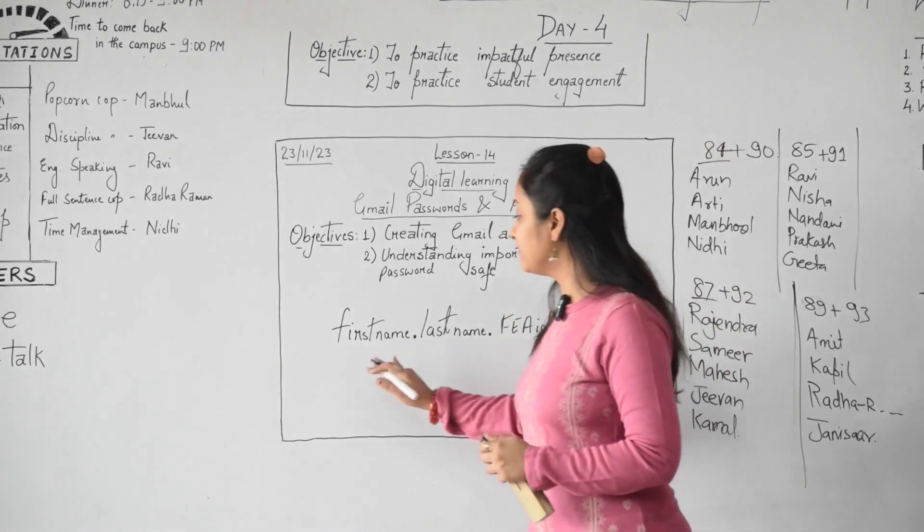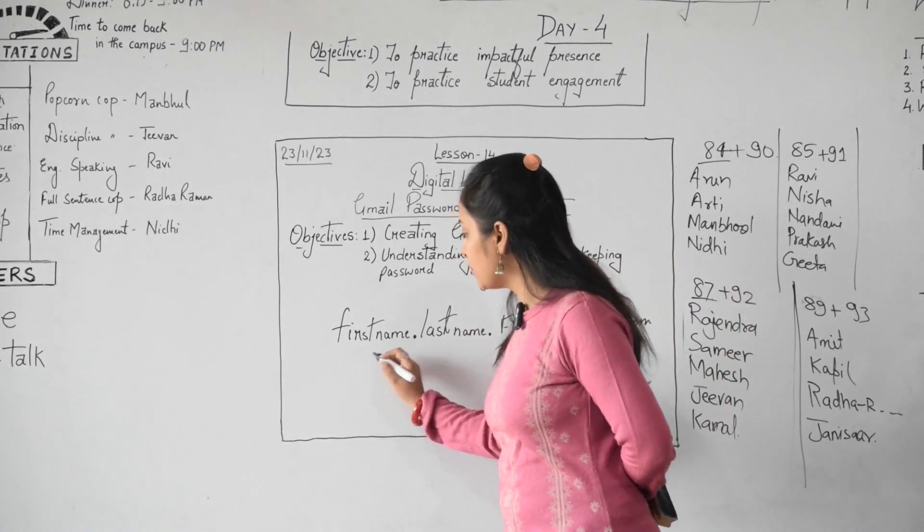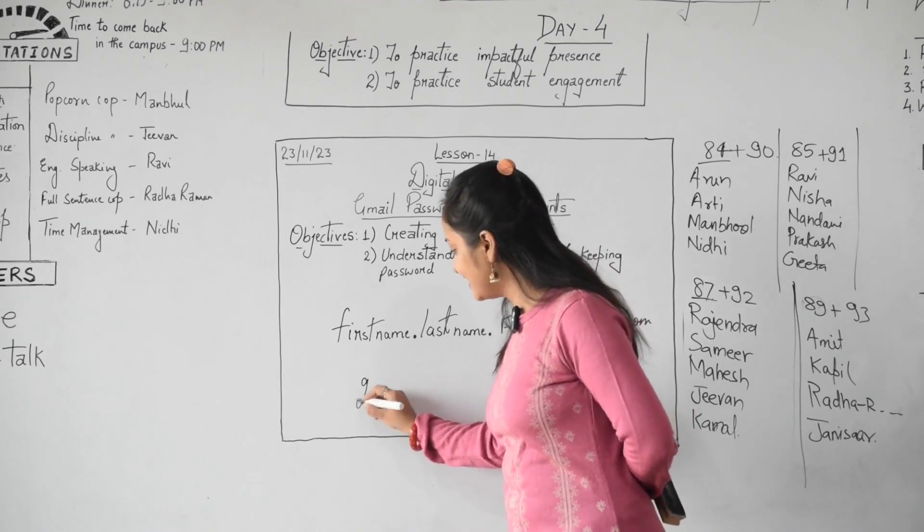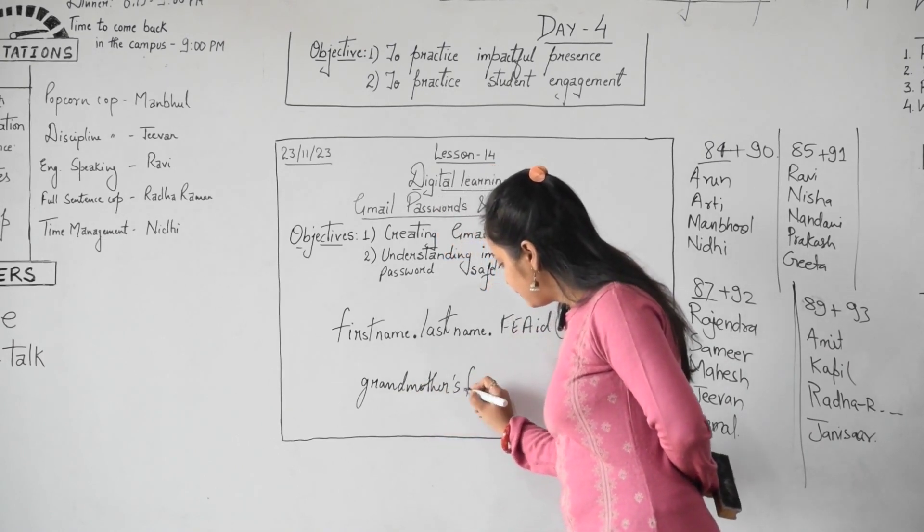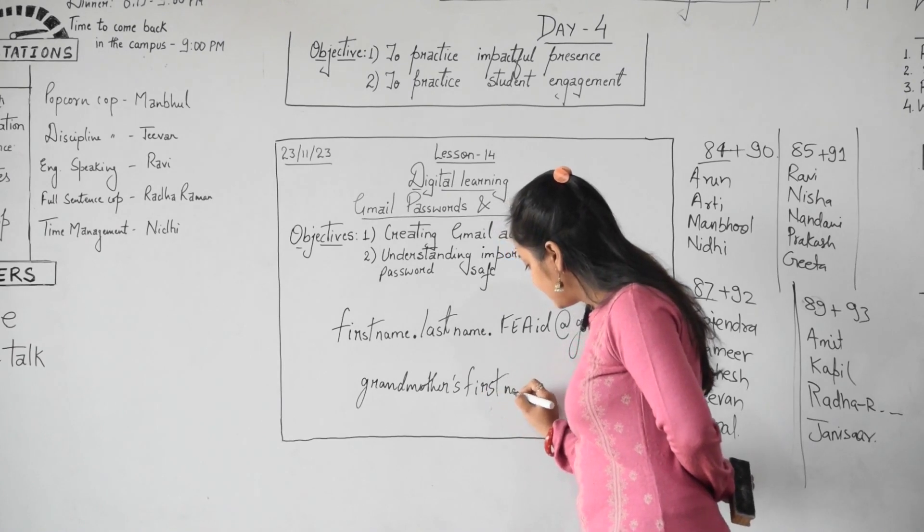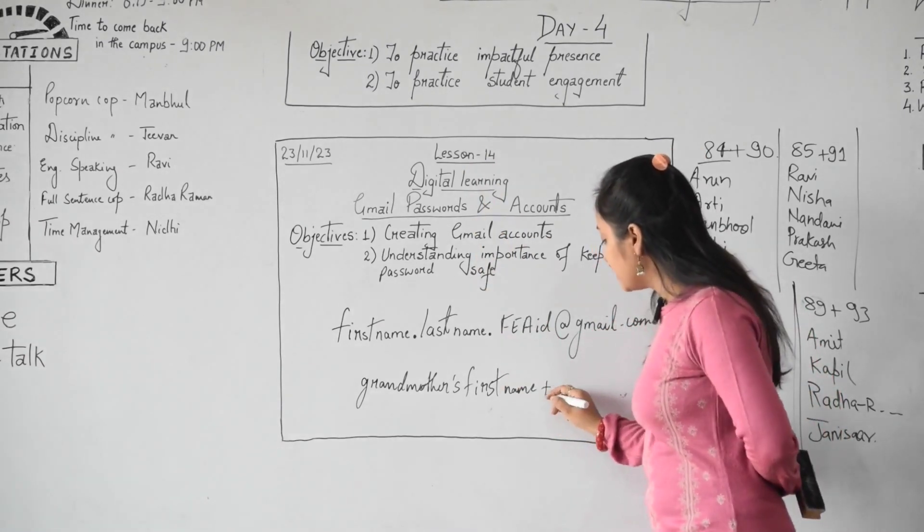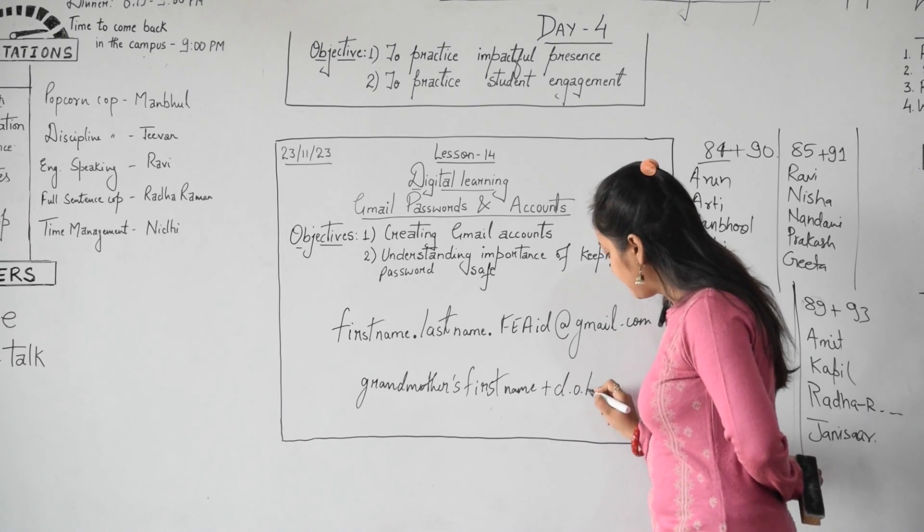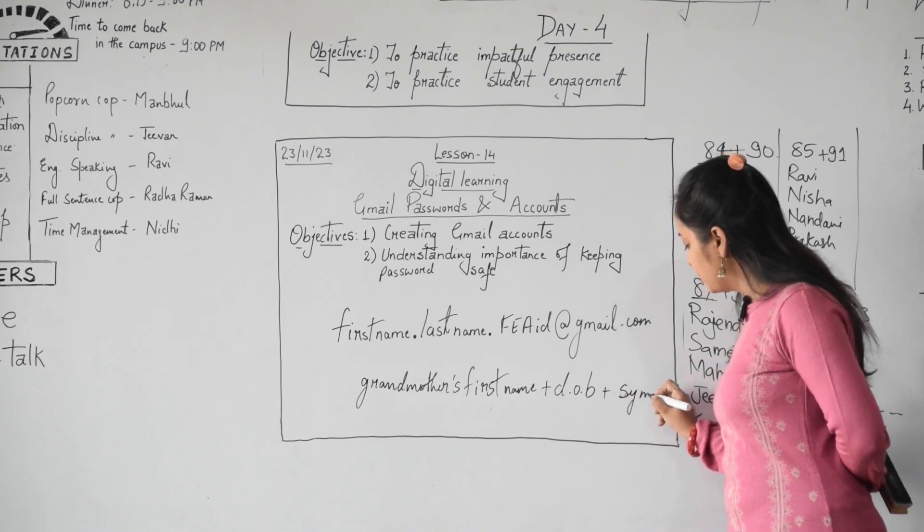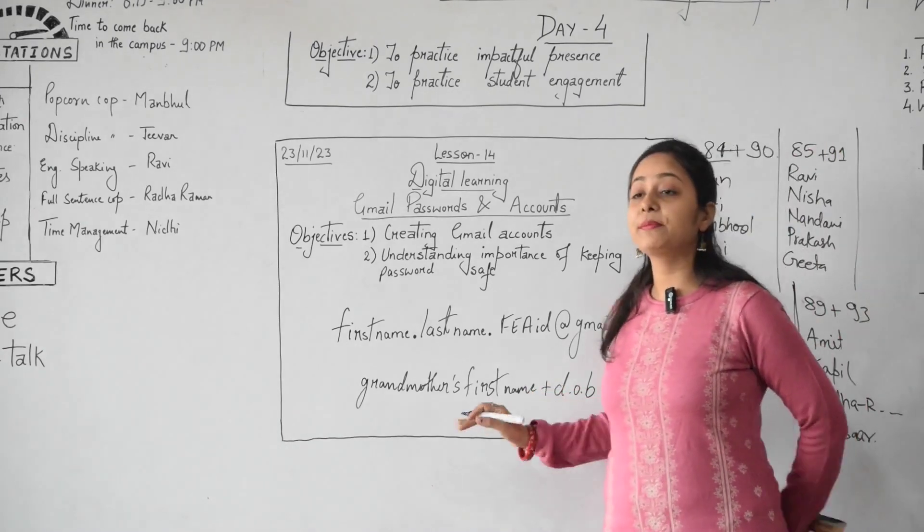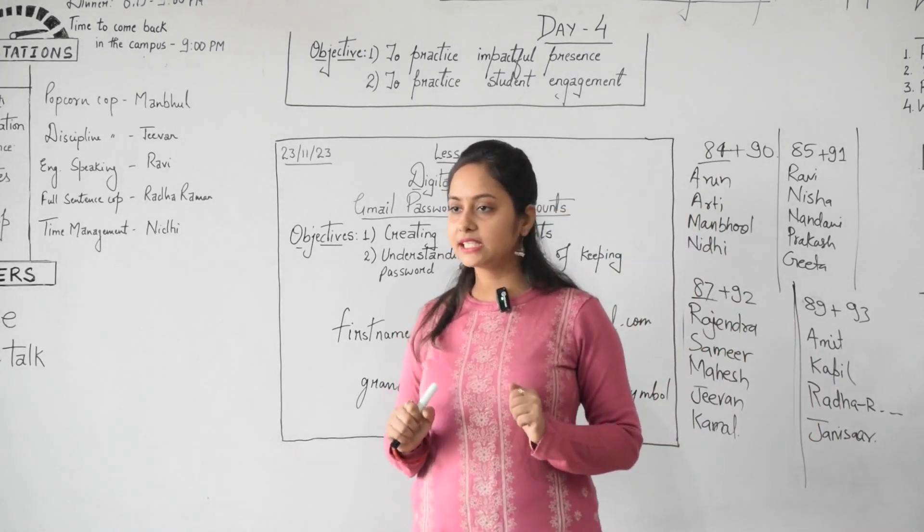Let me give some examples. What kind of passwords we can create? You can write your first name of your grandmother, grandmother's first name. Can anybody guess your grandmother's first name? With that you can write your date of birth. And you can add any symbol. Like this you can make some strong password. I hope it is clear. Great.